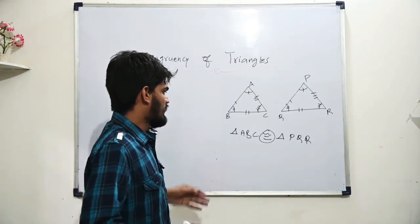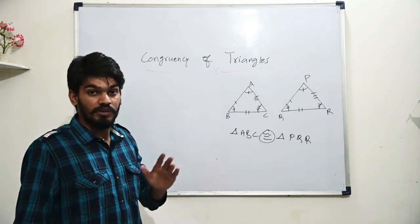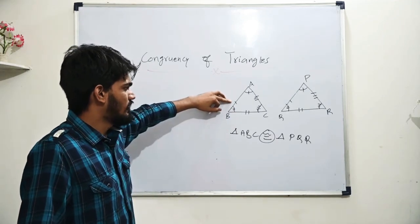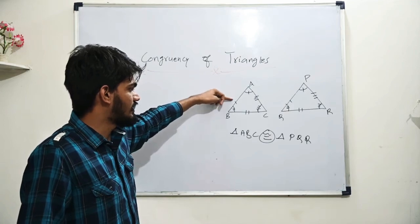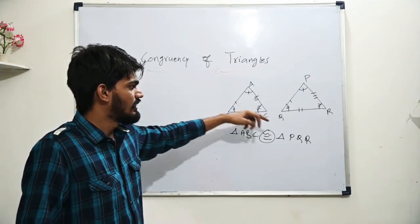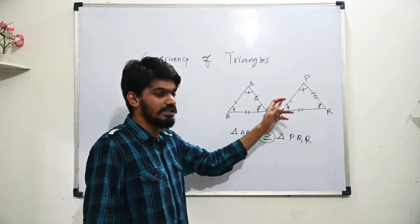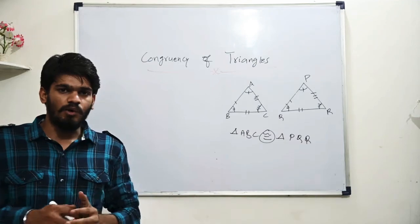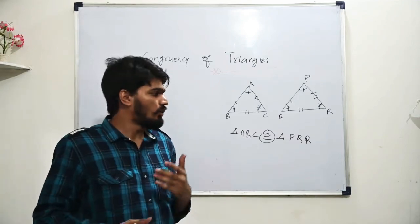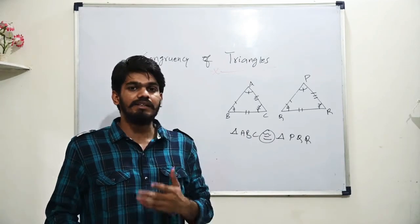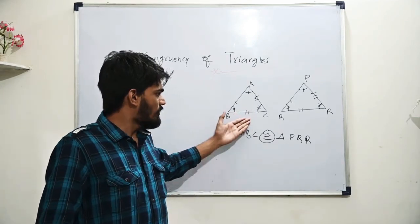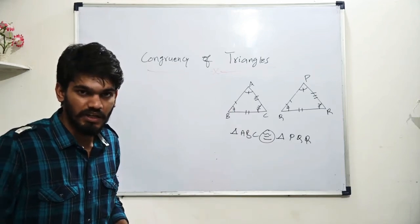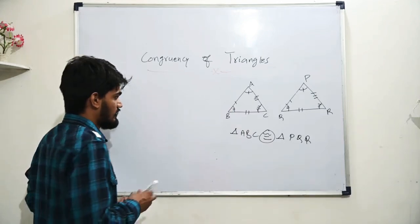Now students, we totally have six pieces of information in each triangle — three angles and three sides. But what if I tell you we don't actually need all six? If we have only three, but special threes, that is sufficient.